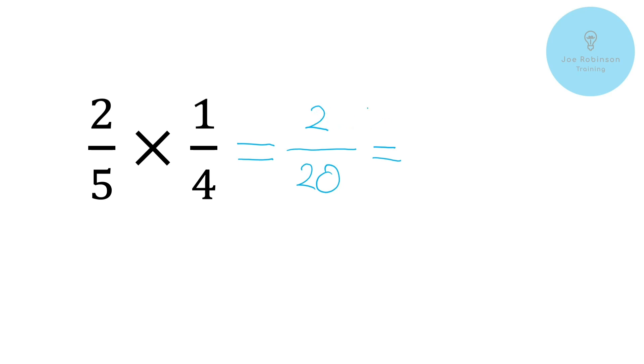So divide top and bottom by the same number. Two divided by two. So we'll just put a little divide by two up here so we can see what we're doing. Two divided by two is going to give us one and then on the bottom here again we do the same. We divide by two. So that's what we call a common factor and 20 divided by two is going to give us 10.